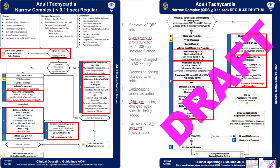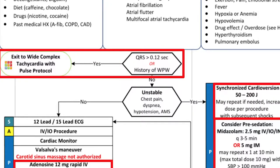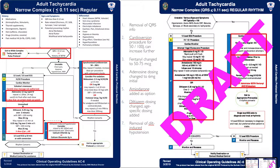Adult tachycardia, narrow complex regular rhythm. Removal of the QRS information from the top since it's already listed at the top of the protocol. Cardioversion procedure at 50 then 100 joules, can increase further. Fentanyl dosing was changed to a standardized dose of 50 to 75. The initial dose of adenosine was changed from 12 milligrams to 6 milligrams.